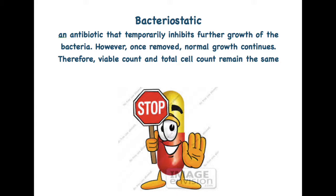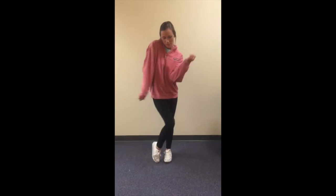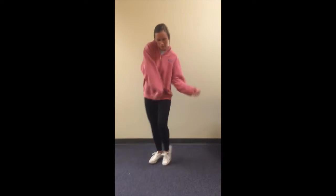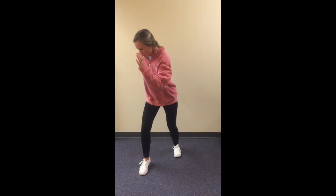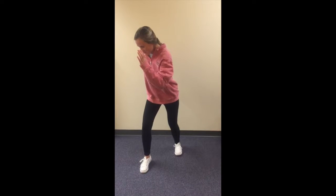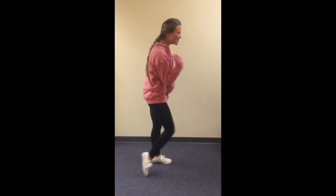Bacteriostatic. This is when an antibiotic temporarily inhibits further growth of the bacteria. However, once the antibiotic is removed, normal growth will continue. Therefore, a viable count and total cell count will remain the same. Notice that after the antibiotics wear off, the bacteria goes back to normal life.